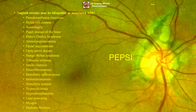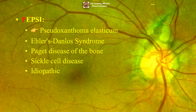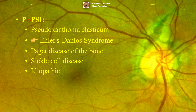Angioid streaks can be idiopathic or associated with numerous systemic diseases, the most common being pseudoxanthoma elasticum. A popular mnemonic used to remember the most common associations is PEPSI: Pseudoxanthoma elasticum, Ehlers-Danlos syndrome. However, recent literature has revealed that the association between angioid streaks and Ehlers-Danlos syndrome is weak, with retrospective studies showing angioid streaks exist in less than 1% of Ehlers-Danlos patients.